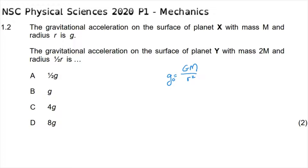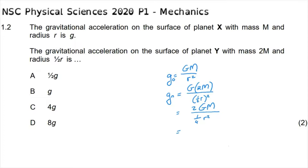We are trying to find the gravitational acceleration on the new planet. The universal gravitation constant remains the same, but the mass becomes double the original mass and the radius becomes one-half of the original radius squared. Both changes increase the gravitational acceleration. Taking the factor of two out front, one-half r squared becomes one over four r squared, giving us two times four times Gm over r squared, or eight Gm over r squared.